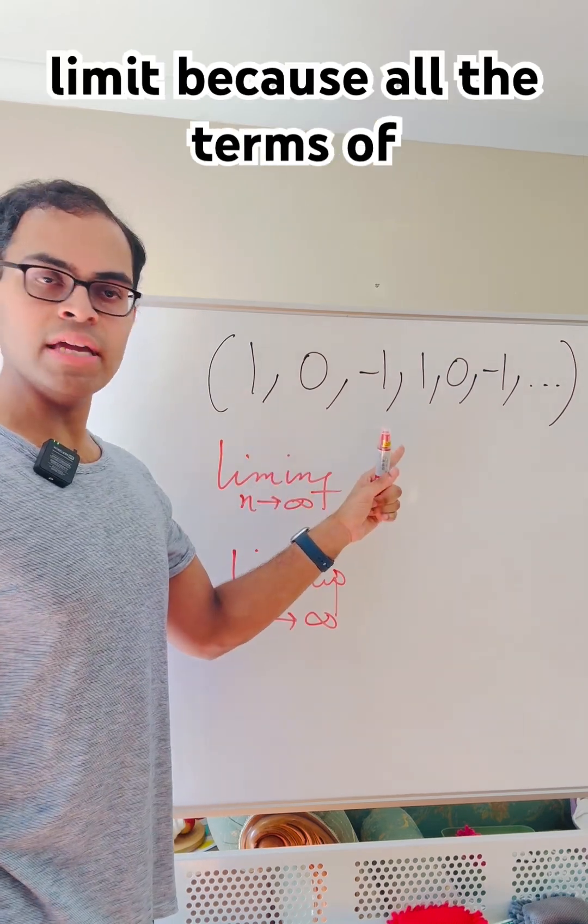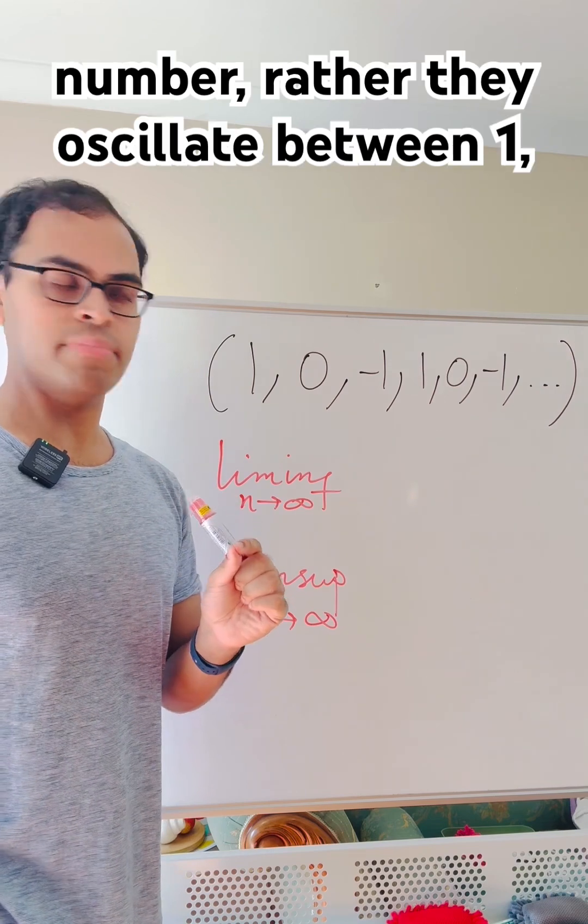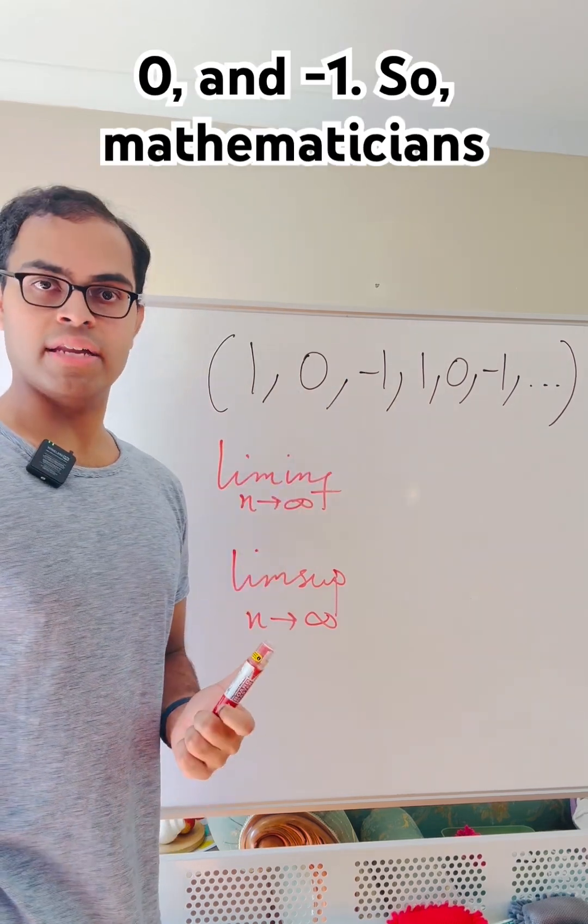This sequence does not have a limit because all the terms of the sequence don't approach a fixed number. Rather, they oscillate between 1, 0, and minus 1.